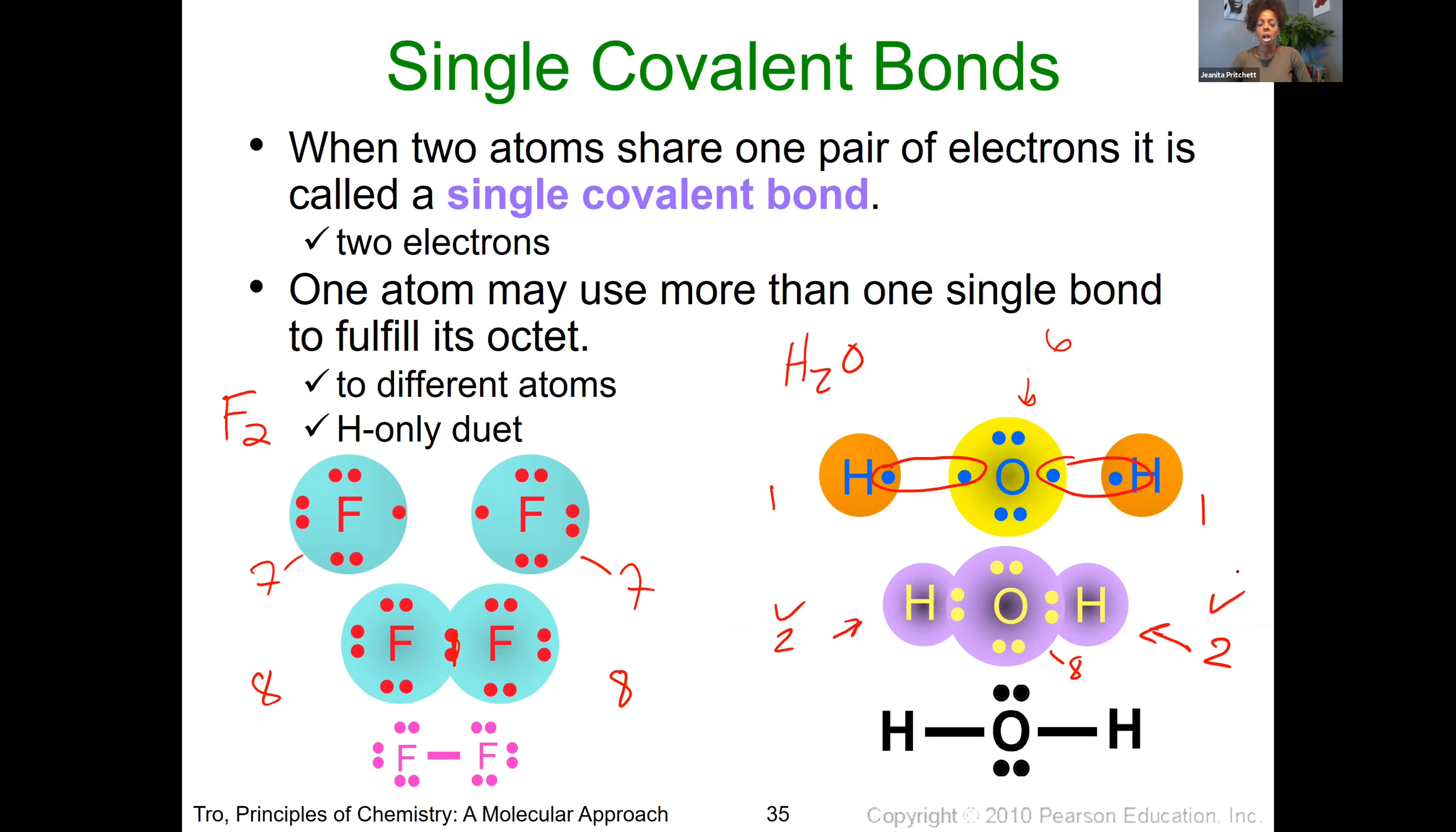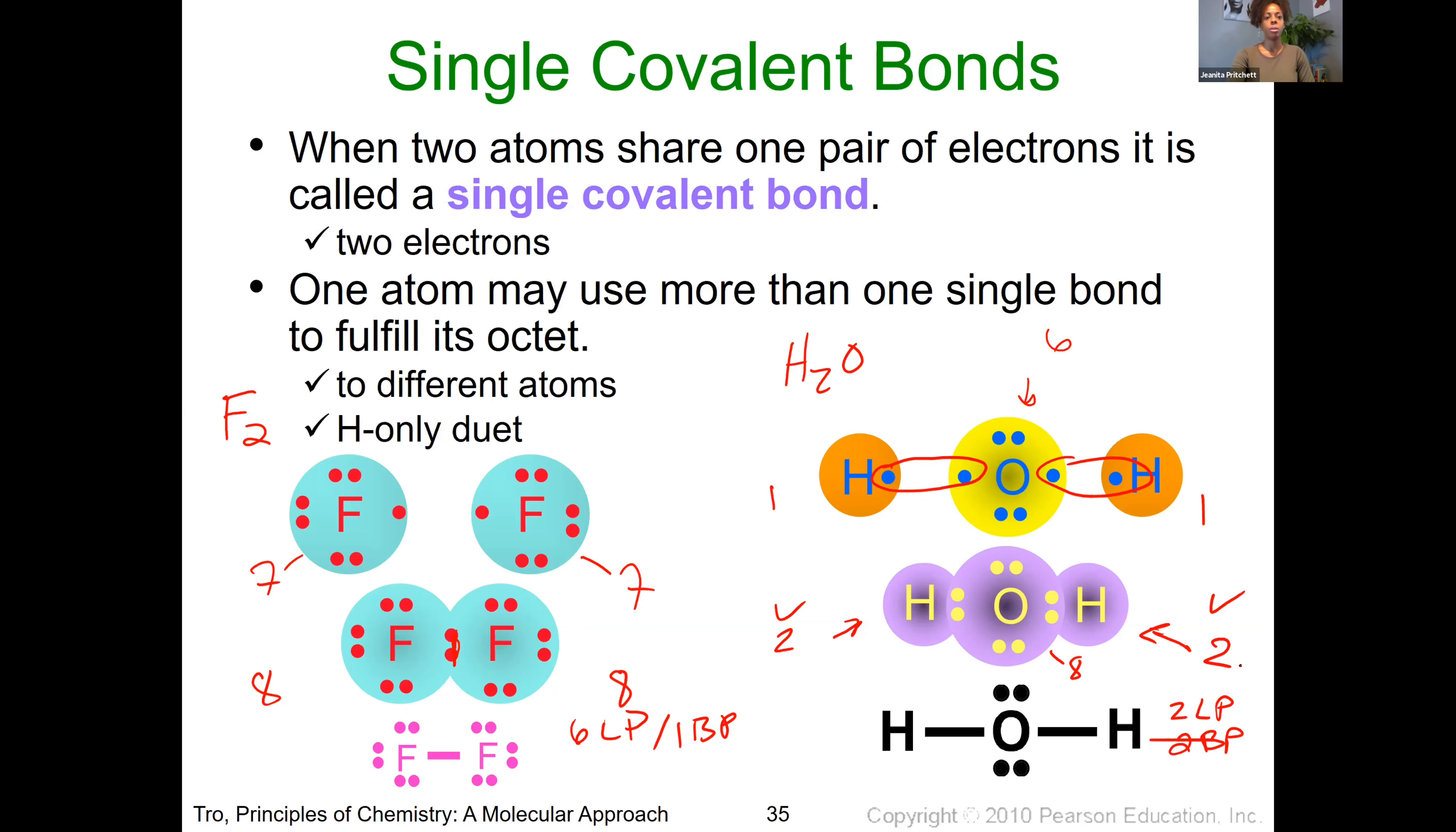You can also use this as an opportunity to practice counting how many lone pairs you have versus how many bonding pairs. In the structure to the left, F2, we would end up having six lone pairs and one bonding pair, that pair that's connecting the two. In the water molecule, we have two lone pairs and two bonding pairs. Make sure you get some good practice with that. When we get to chapter 10, being able to distinguish those two things is going to be critical.